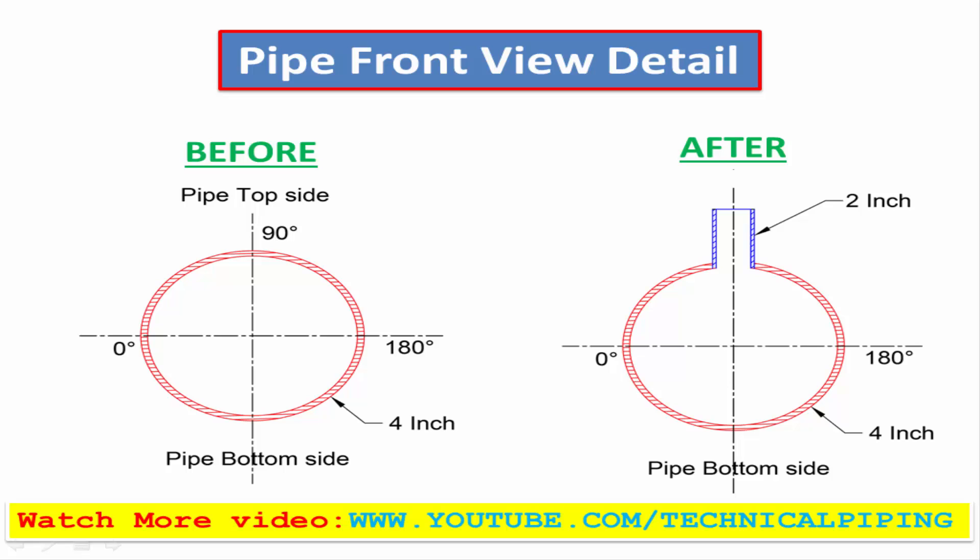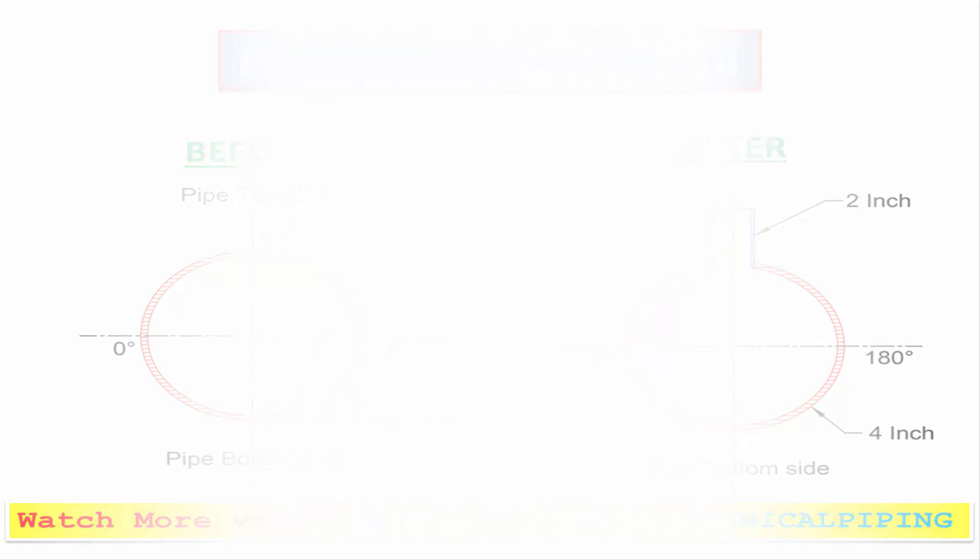Watch the next 6 steps. They explain step by step how to mark the center of the pipe to make a branch connection.